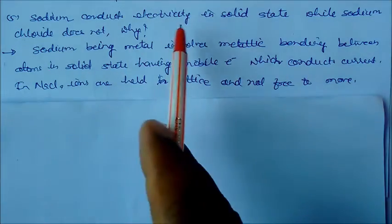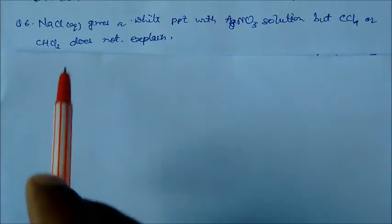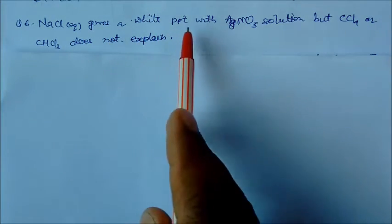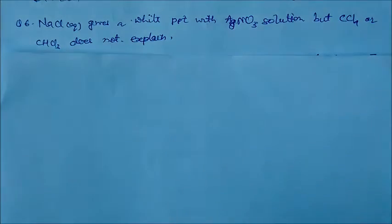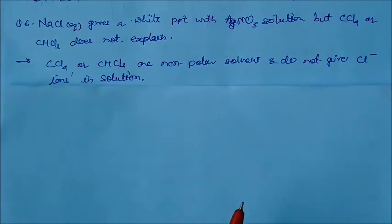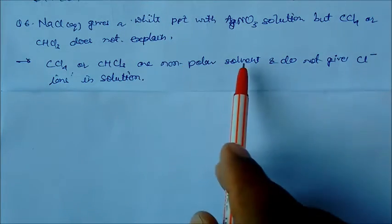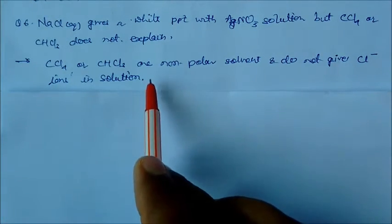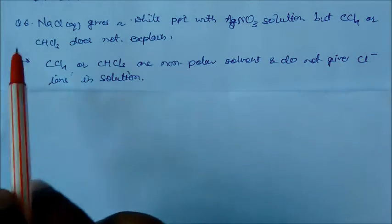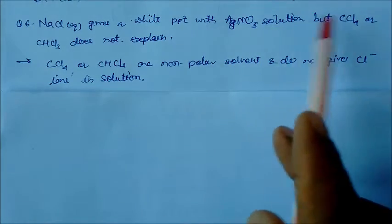Sodium chloride in aqueous solution gives a white precipitate with silver nitrate solution, but CCl4 or chloroform does not. Why? The reason is CCl4 or chloroform are non-polar solvents and they do not give Cl- ions in solution. That is why NaCl gives Cl- and they will react with AgNO3, while CCl4 and chloroform do not.